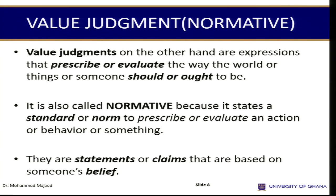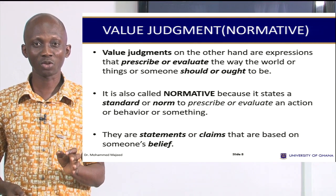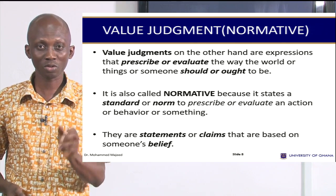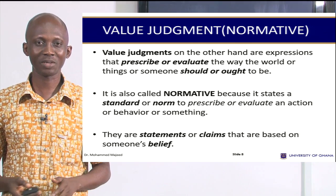So if we want to write more examples, we need to bear in mind that factual sentences should be things that we can empirically find out whether they are there or not. And normative sentences are not necessarily empirical, but they describe the world as it ought to be — saying what someone or something ought to be.